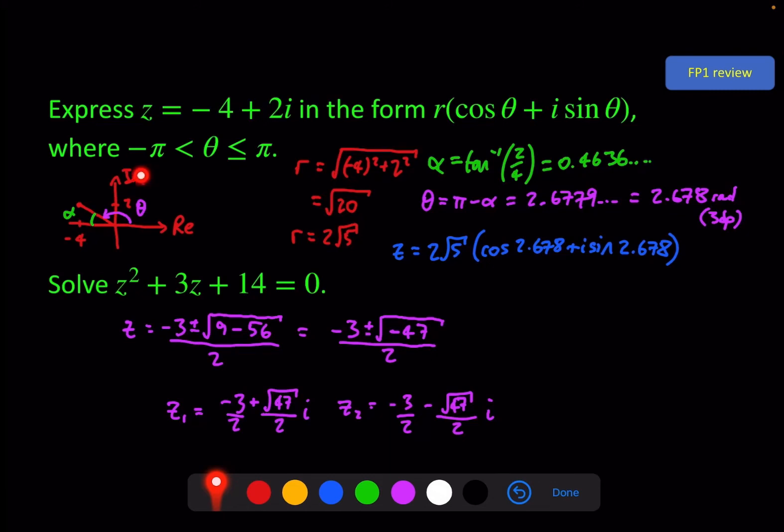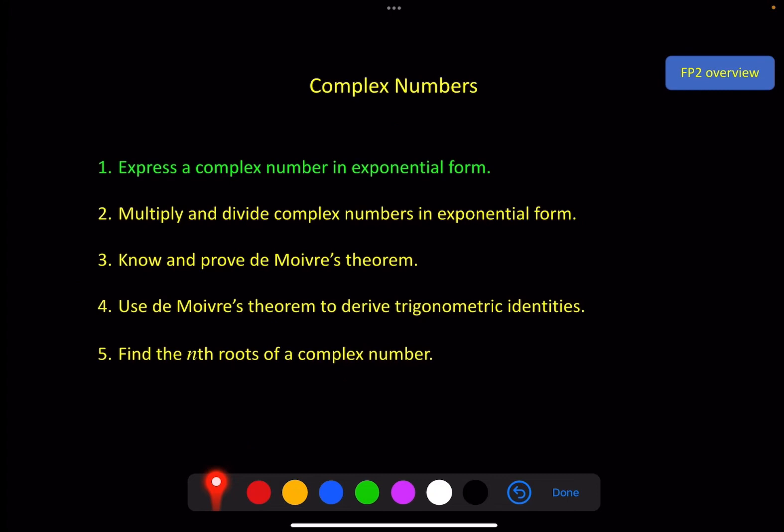Okay, so in the review here, we've covered Argand diagram, modulus argument form of a complex number, and the fact that we can solve equations giving us the same number of solutions as the order of the polynomial. And we've got a complex conjugate pair coming out of this. What we're going to do in FP2, we're going to take this a little bit further. We're going to look at exponential form of a complex number.